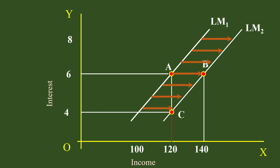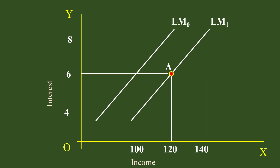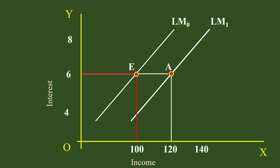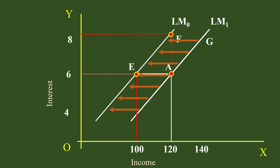Now let us see the case of leftward shift. The LM curve shifts to the left because the monetary authorities reduce the money supply. The new LM curve is LM0, and the values of income are reduced. Point E on LM0 represents Rs.100 income — less than before — and the same interest level of 6%. Point F on LM0 represents Rs.120 income and a higher interest of 8%. Points E and F are away from A and G. This clearly tells us that the reduction in income is not brought about by a change in interest.